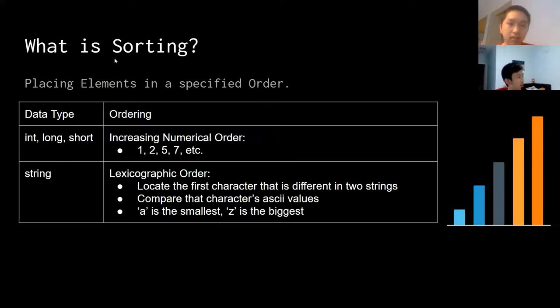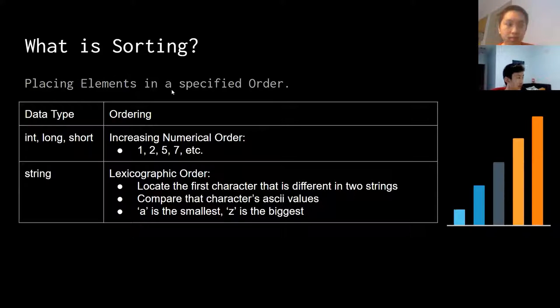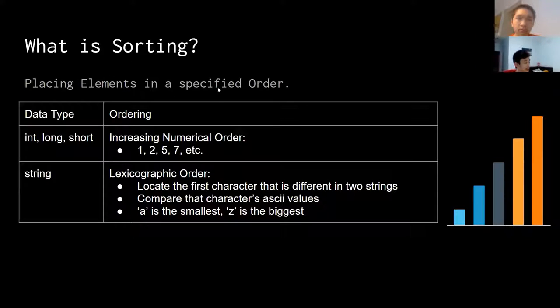Sorting in Java. What is sorting? Sorting is usually defined as placing elements in a specified order. For data types like int, long, and short, you can sort them in increasing numerical order.